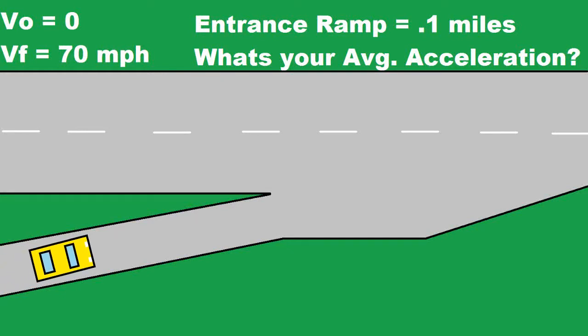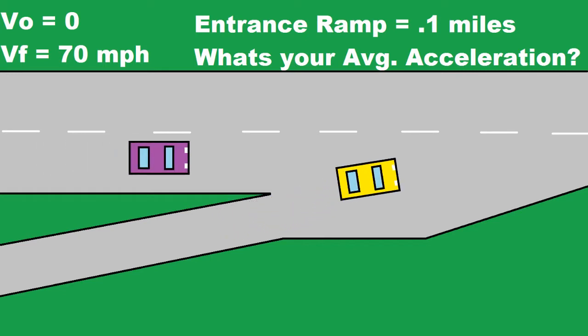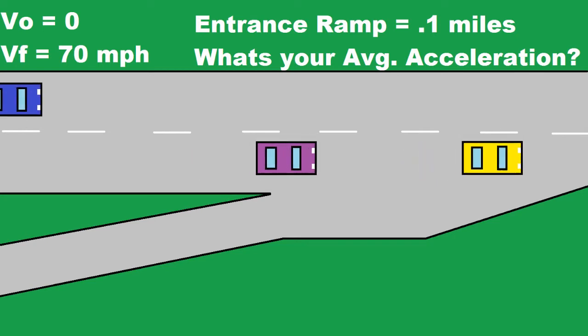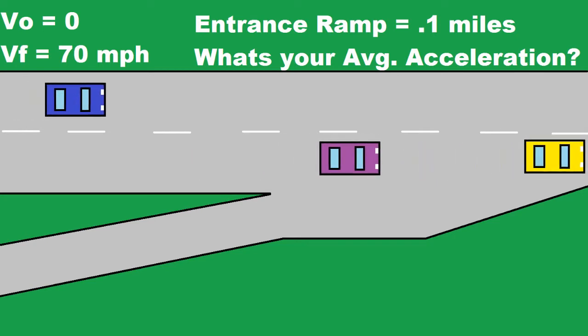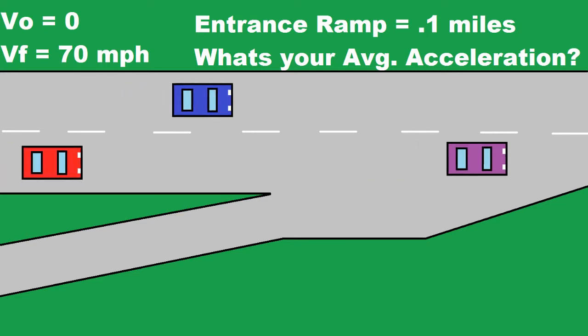Let's do a physics acceleration problem. In this one, you're trying to merge into traffic on the expressway. The expressway's speed limit is 70 miles per hour. You have an entrance ramp that's 0.1 miles long, and you're starting off from 0 miles per hour. This question wants you to find what the average acceleration of your car needs to be.